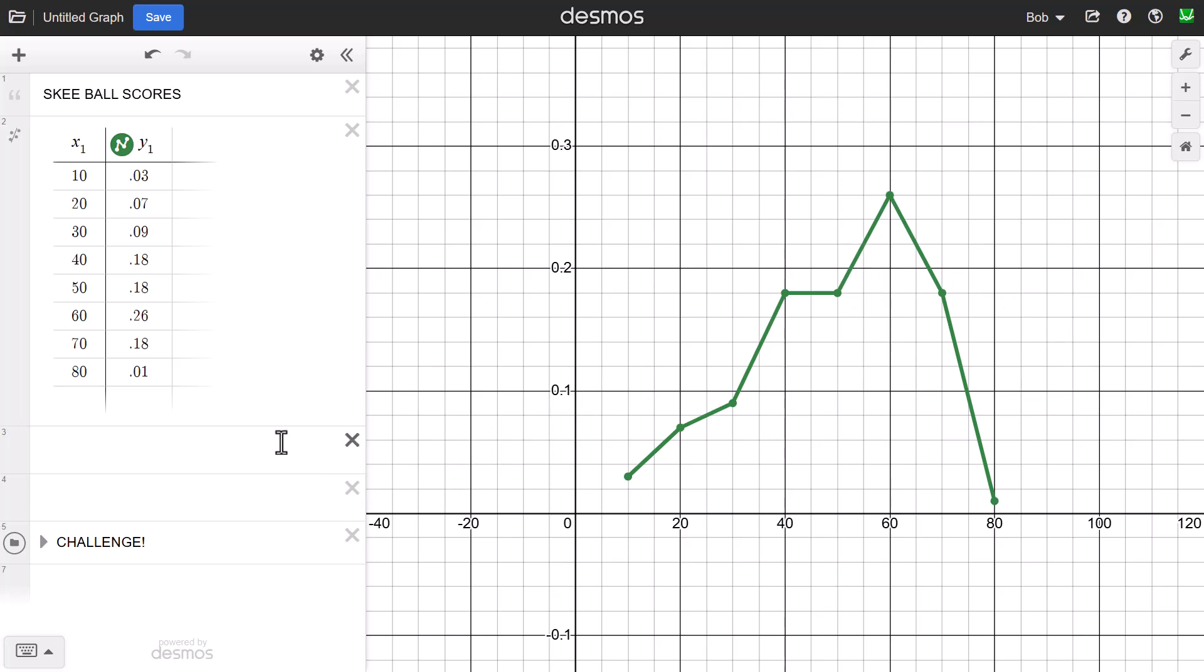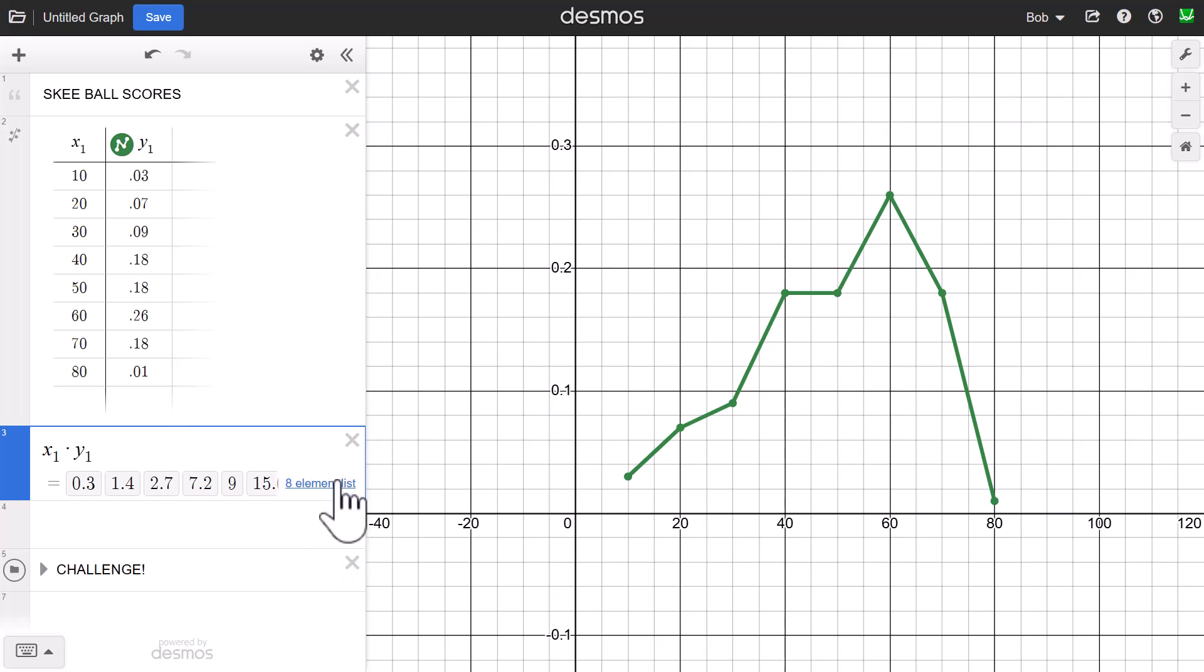Okay, so how do I find the expected value of this distribution? Well, think about how we find expected value in general. We take all the values and multiply them by their probabilities, so that's what I'm going to do here. I'm going to type x1, and notice when I type x1, one automatically subscripts. You don't have to do anything fancy there. Times y1, and here I have all of the different values you would get if you multiplied x1 times y1. So if students were doing this on an exam and had to show their work here, here are all of those values that we would expect students to write in the table.